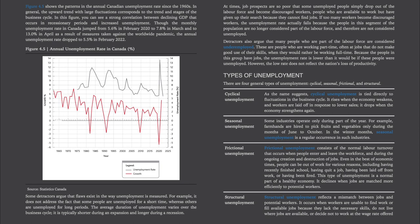Some detractors argue that flaws exist in the way unemployment is measured. For example, it does not address the fact that some people are unemployed for a short time, whereas others are unemployed for long periods. The average duration of unemployment varies over the business cycle — it is typically shorter during an expansion and longer during a recession. At times, job prospects are so poor that some unemployed people simply drop out of the labor force and become discouraged workers — people who are available to work but have given up their search because they cannot find jobs. If too many workers become discouraged workers, the unemployment rate actually falls because these people are no longer considered part of the labor force and therefore are not considered unemployed.